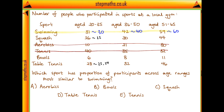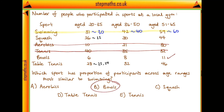For bowls, half of 11 is 5.5, so about 6 — and that's pretty close. And three quarters of 8 is also 6. So the proportions for bowls are certainly closer than squash and table tennis. It seems like bowls is going to be our answer, and that's answer B.